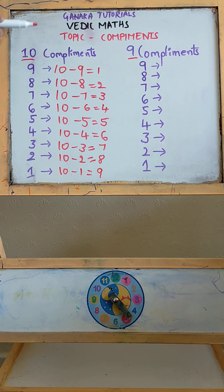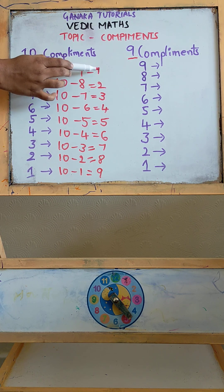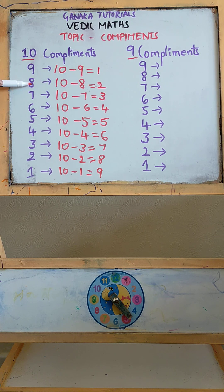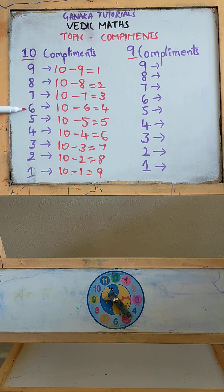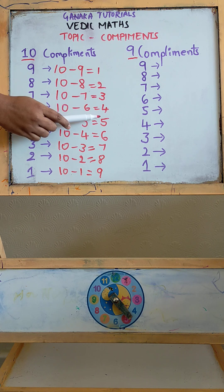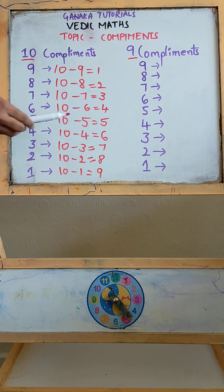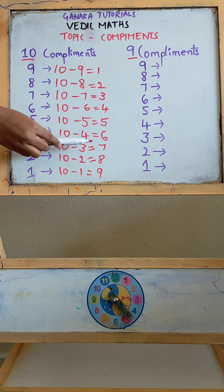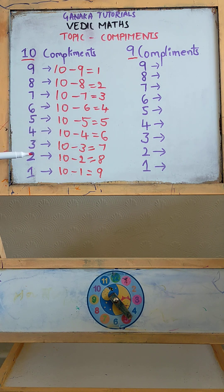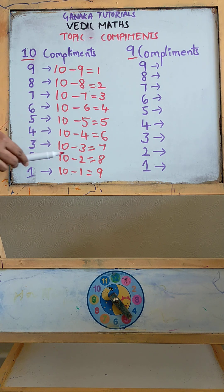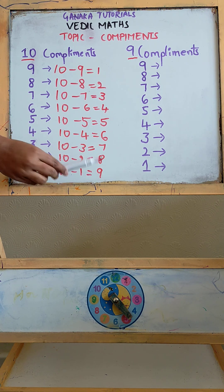So for base 10: complement of 9 is 1, complement of 8 is 2, complement of 7 is 3, complement of 6 is 4, for 5 it is 5, for 4 it is 6, for 3 it is 7, for 2 it is 8, and for 1 it is 9.